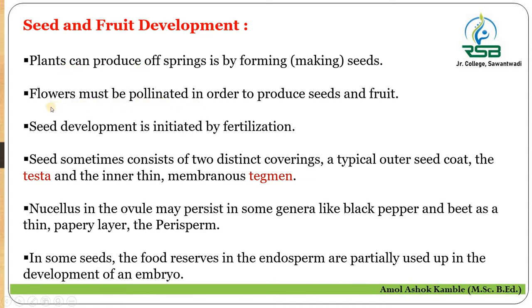Before the development of a plant, the flower must undergo pollination. After successful pollination, fertilization takes place, followed by development of the zygote and then the embryo. Finally, the flower gives rise to the fruit, and inside the fruit there is development of seeds.